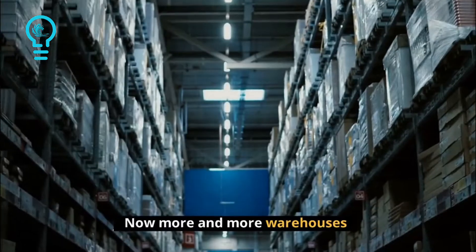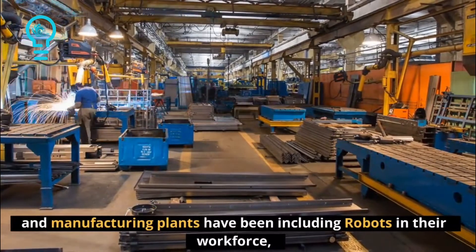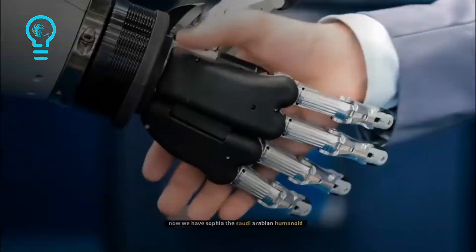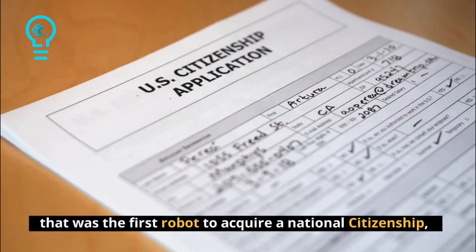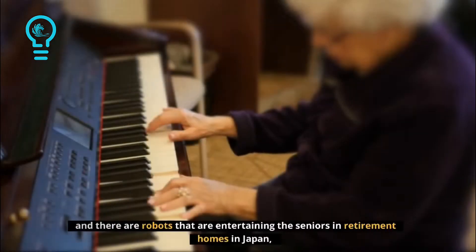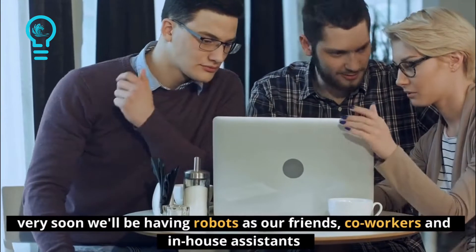Number 6, Robotics. Now more and more warehouses and manufacturing plants have been including robots in their workforce. Now we have Sophia the Saudi Arabian humanoid that was the first robot to acquire a national citizenship, and there are robots that are entertaining the seniors in retirement homes in Japan. Very soon we'll be having robots as our friends, co-workers and in-house assistance.